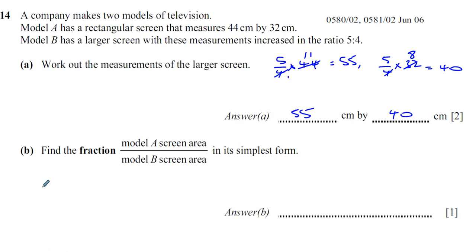The long way: A is the original, so you would find the area of the screen which is 44 by 32, 44 times 32, divided by the new area which is 55 times 40, and then simplify that.